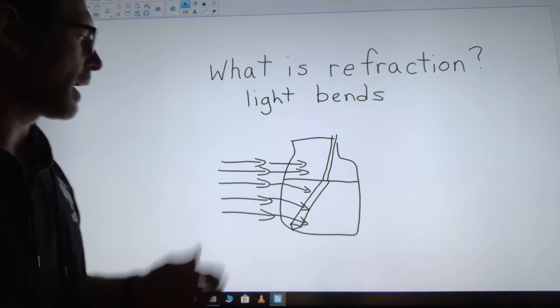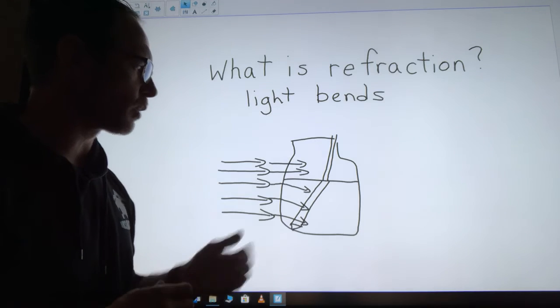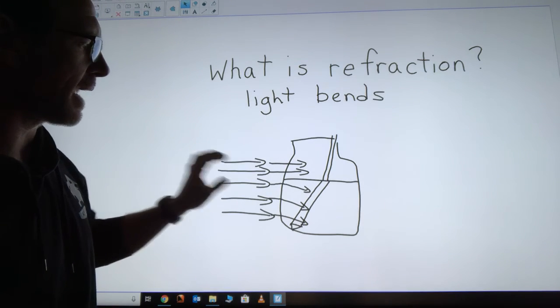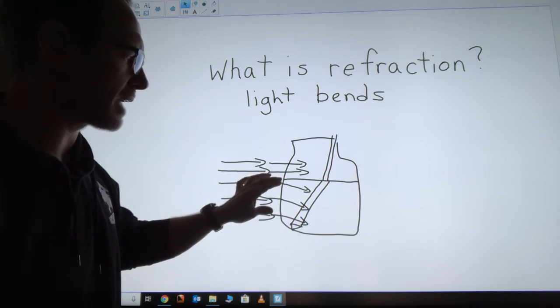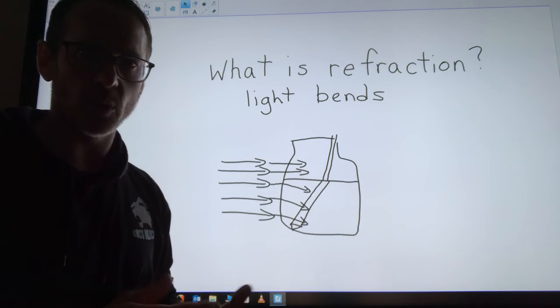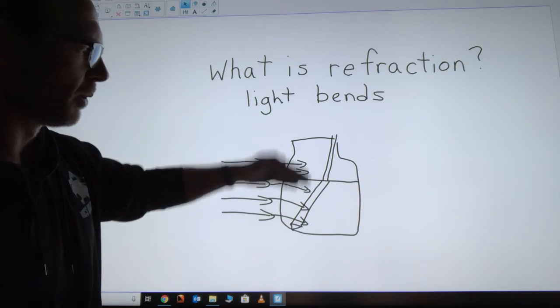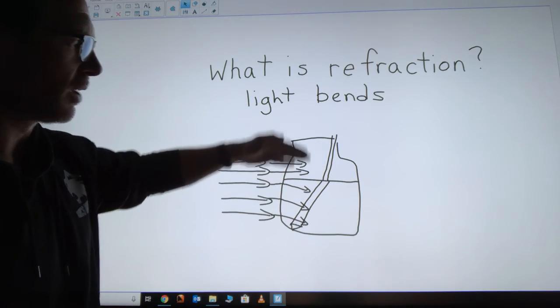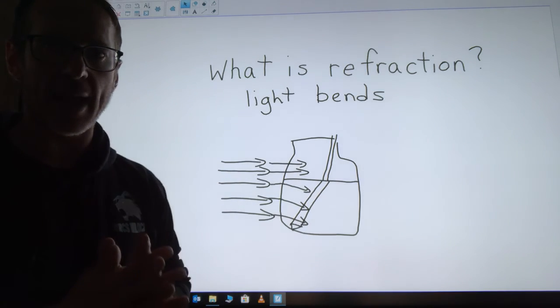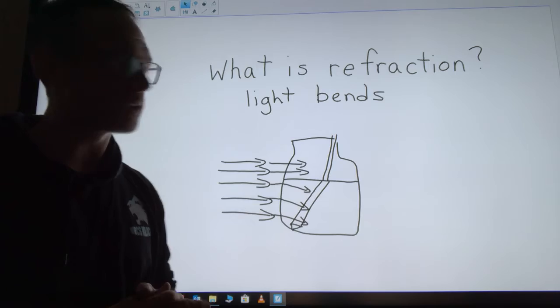The experiment we did for this was the bent pencil experiment. When light enters the water it slows down, causing the light rays to bend, and it gives us this kind of distorted view of the pencil below the waterline. Yet it looks completely normal to us in the air part above the waterline. It just has to do with the way the light changes when it hits the water.